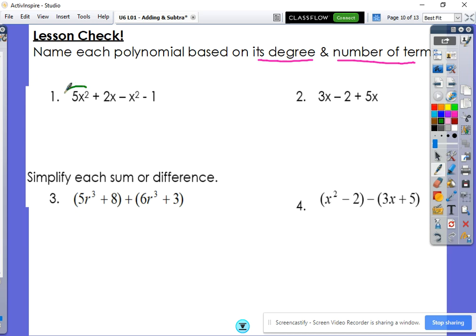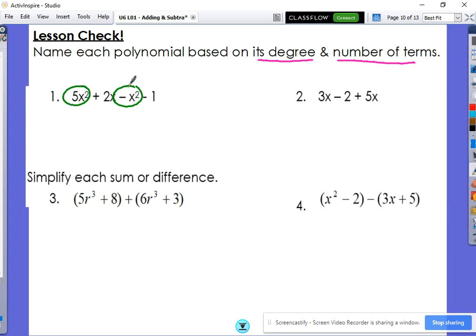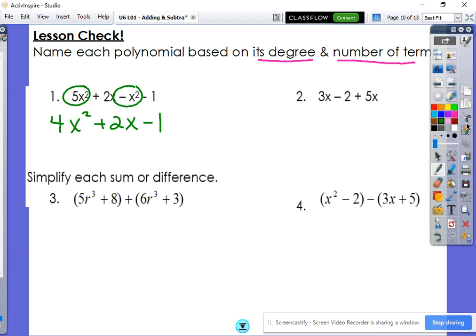All right. First, let's put this in standard form by combining like terms. Those are like terms. So if we do 5x squared minus x squared, that gives me 4x squared. The plus 2x didn't have anybody. Neither did the negative 1. So now we're in standard form.